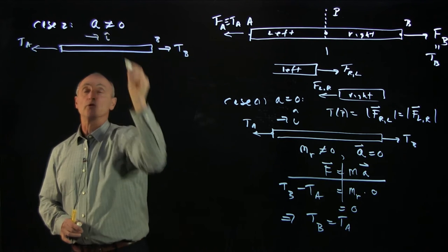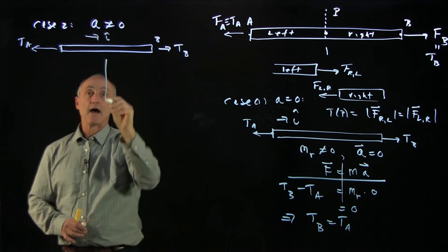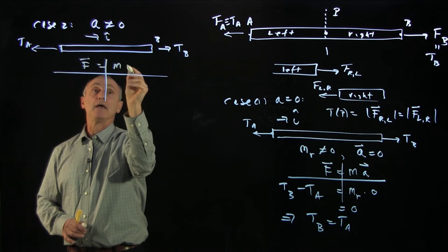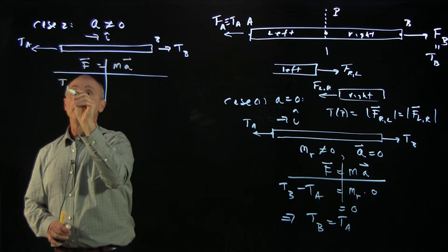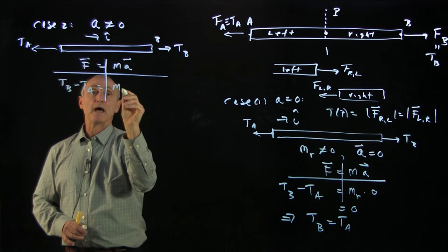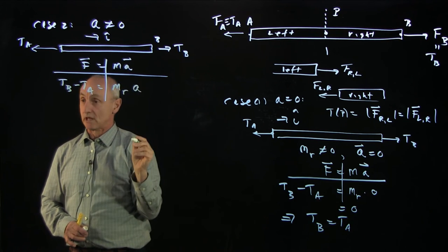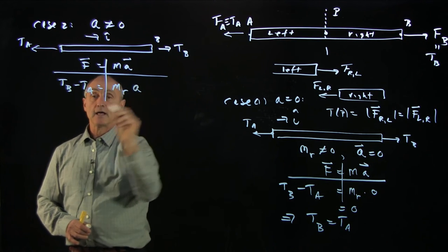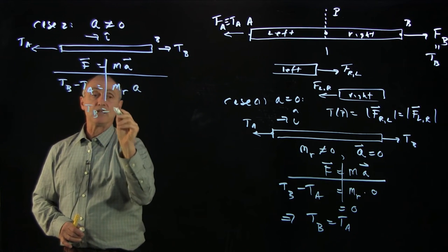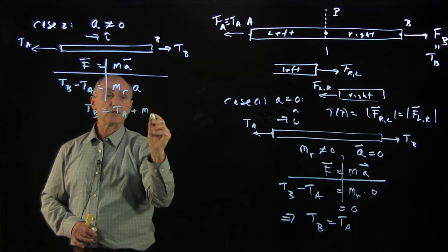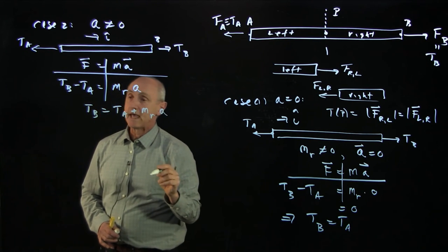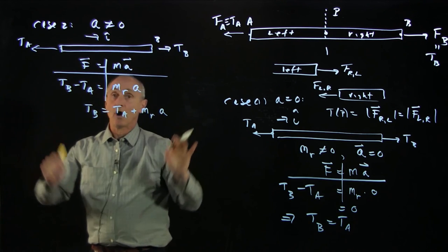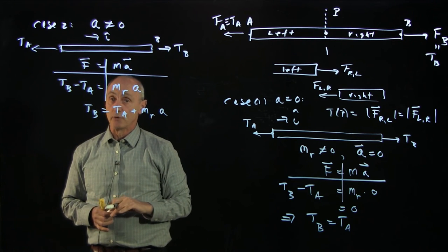We'll choose a uniform direction, A. And now we can see, when we apply F equals ma, that TB minus TA equals mass of the rope times the acceleration of the rope. So you're pulling such that TB is greater than TA by precisely the quantity MR times A. And so the tension at the ends are not the same. And therefore, the tension in the rope is not uniform.